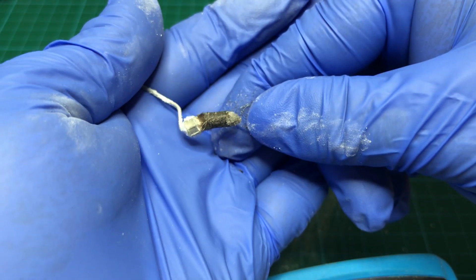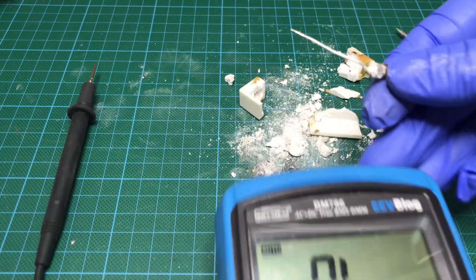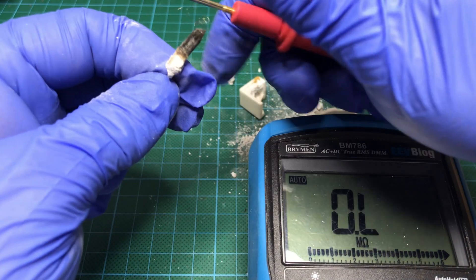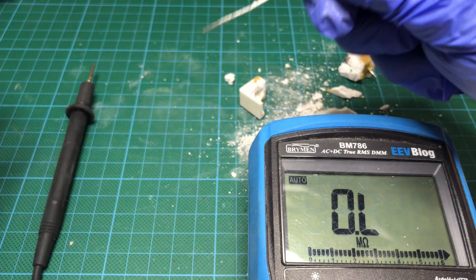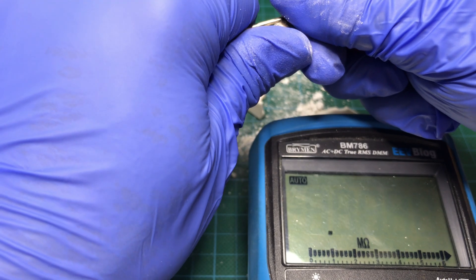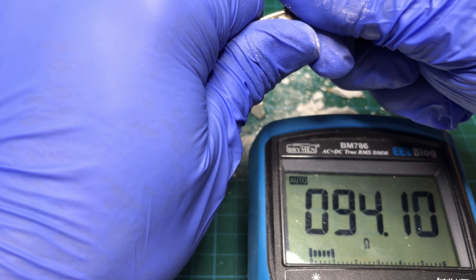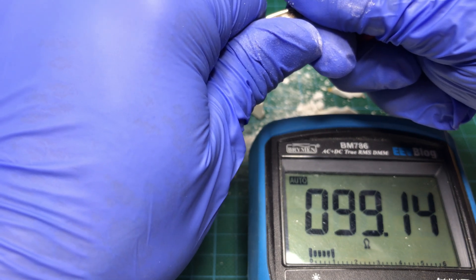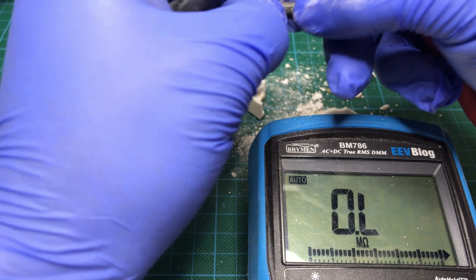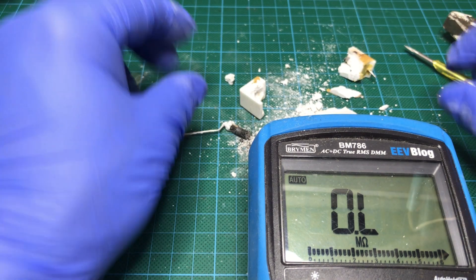Now let's try to take a measurement there. So still nothing here, but let's try here. And there we go, about 100 ohms for this small piece I am measuring here. So we can definitely say